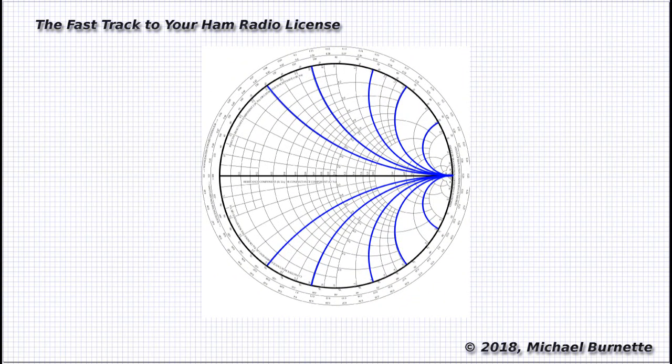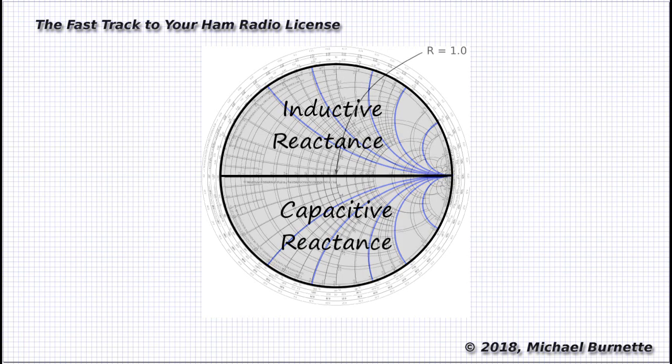Those are the reactance arcs. The reactance arcs in the top half of the chart, above the resistance axis, represent inductive reactance. The arcs in the bottom half are capacitive reactance.